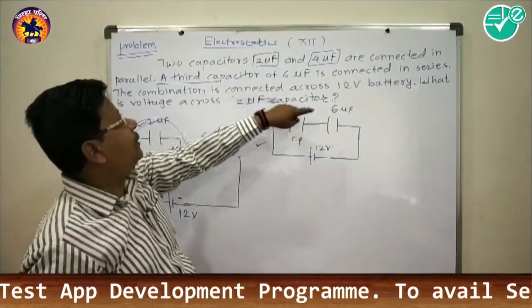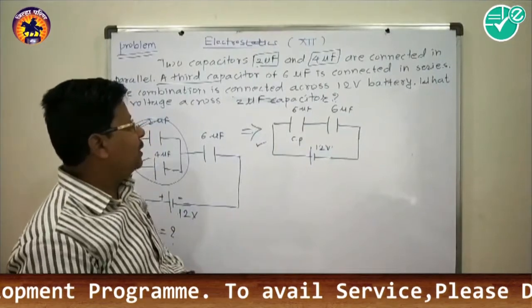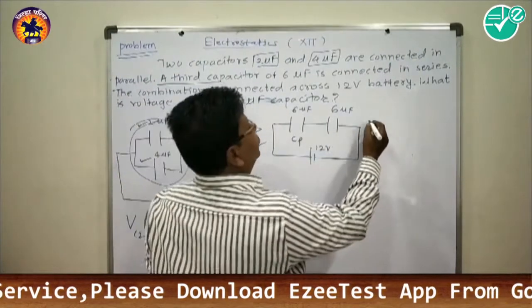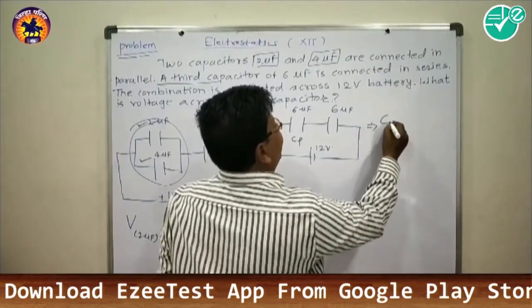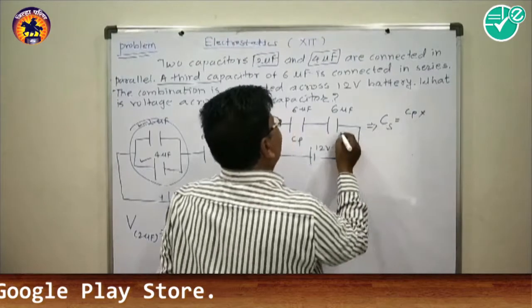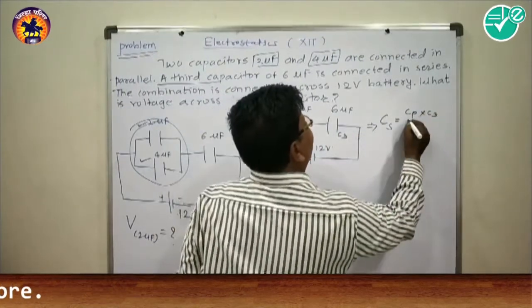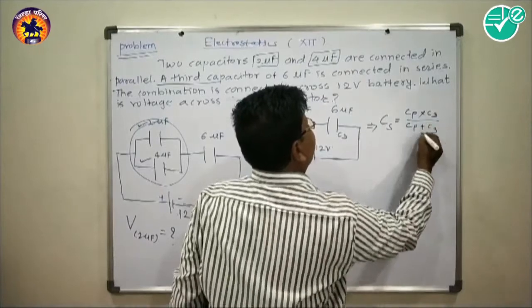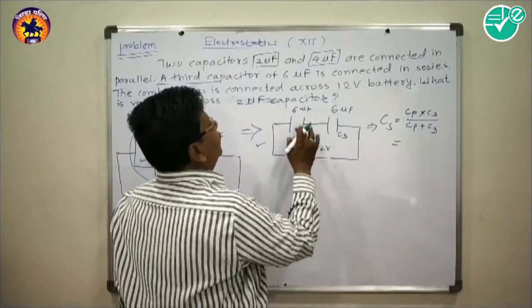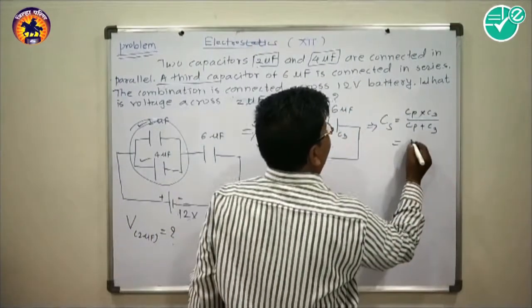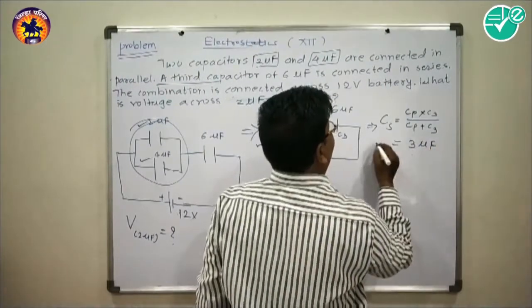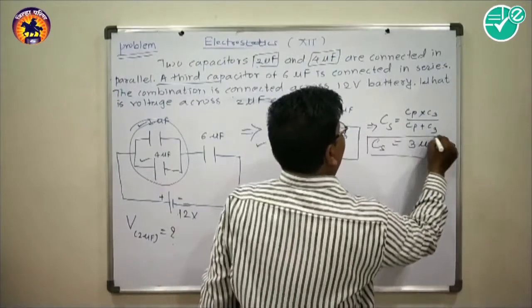The 6 microfarad Cp and the 6 microfarad capacitor are in series, so Cs = Cp×C3 / (Cp + C3) = (6×6) / (6+6) = 36/12 = 3 microfarad.